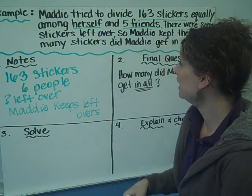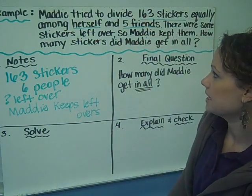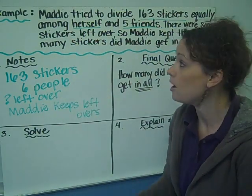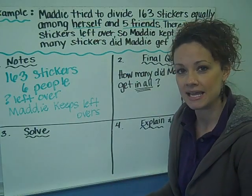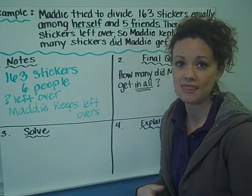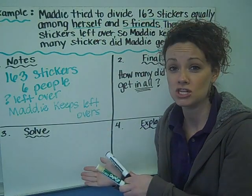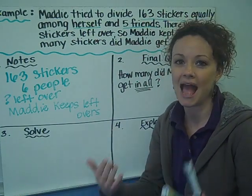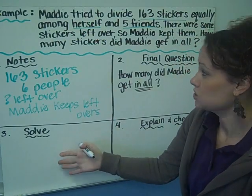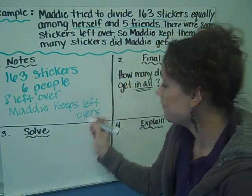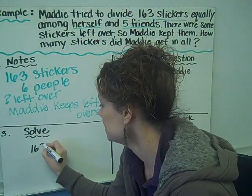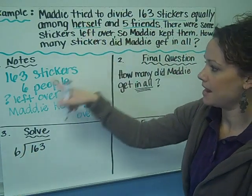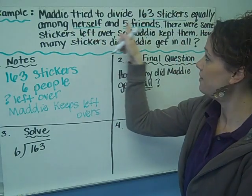I take the total, 163 stickers, shared equally among six people, and set up a long division problem: 163 divided by 6, because five friends plus Maddie equals six people altogether. This is a trick you need to watch for — look at all the information very carefully. Going through long division steps: does six go into one? No, so pull in the next number.